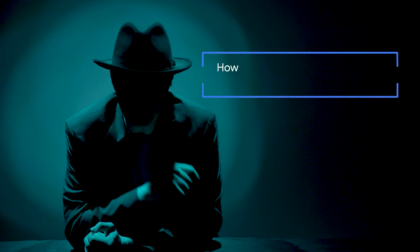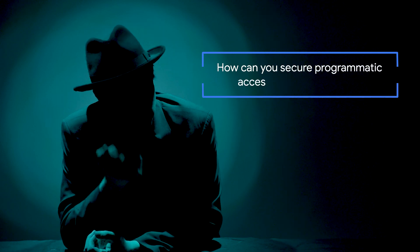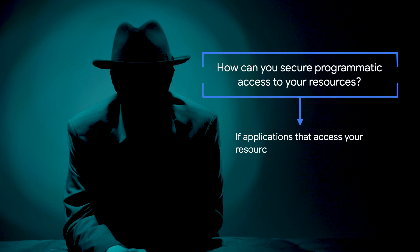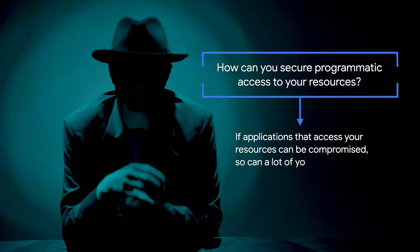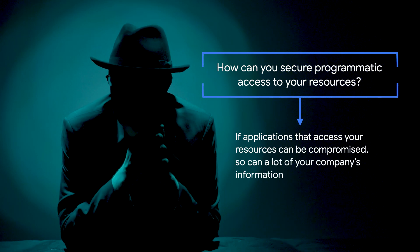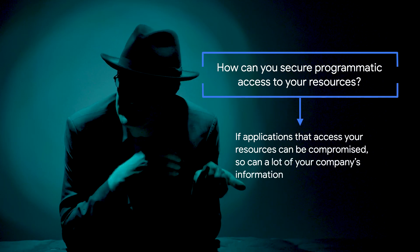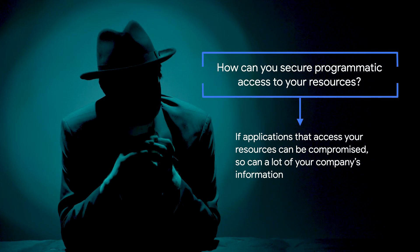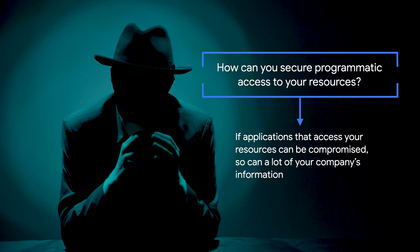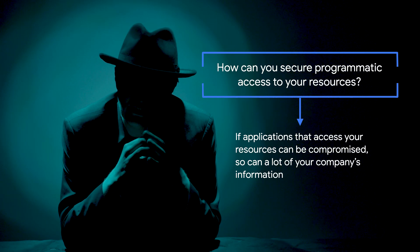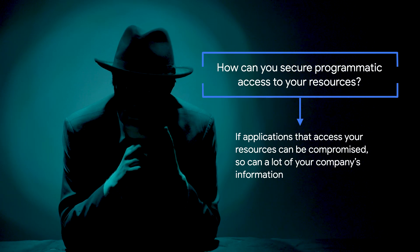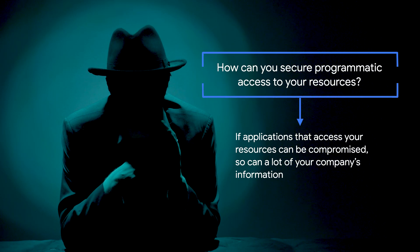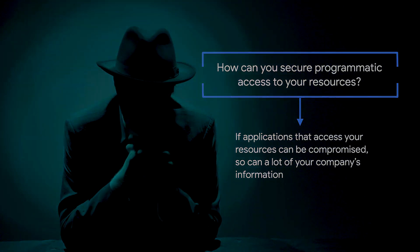Hello, Cloud Detective. Last time, you foiled my plan to compromise your company's security. You used IAM to keep your members' identity secure and keep me from accessing the data I wanted. Your employees are secure enough, but what about your scripts and applications? If the applications that can automatically access your resources can be compromised, then so can a lot of your company's information.